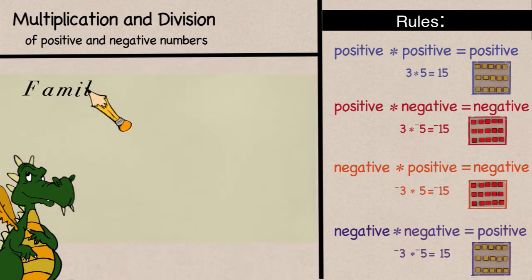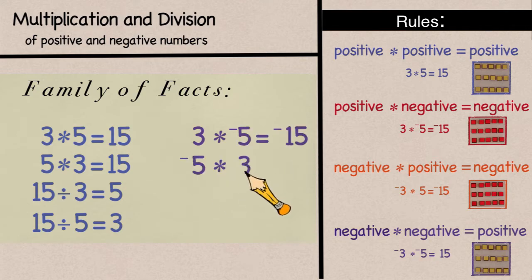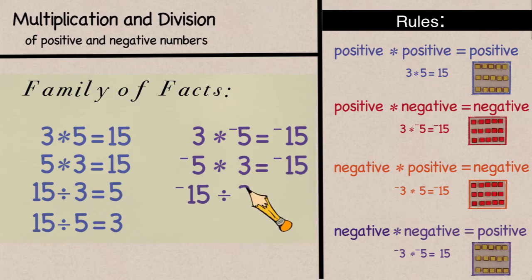Do you remember learning the family of facts when you first started to multiply and divide? Let's look at the family of facts for 3 times negative 5. Next, we'd have negative 5 times 3 is negative 15. Negative 15 divided by 3 is negative 5, just like with multiplication.